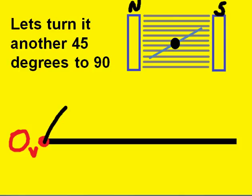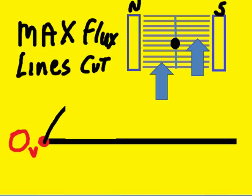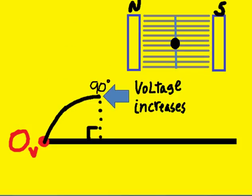Let's turn it another 45 degrees to 90. Maximum flux lines are now cut, and voltage increases to its maximum.